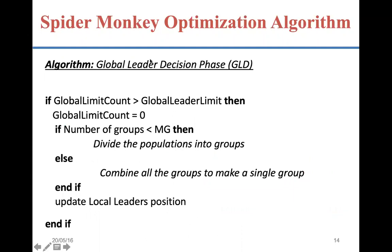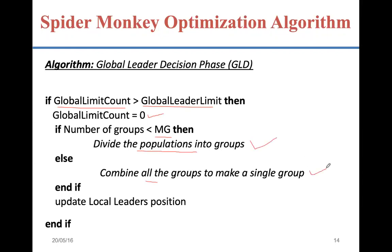The global leader decision phase is implemented such that when the global limit count reaches the global leader limit, the phase initiates; otherwise it does not. Once triggered, the global limit count resets to zero. If the maximum number of groups are not yet formed, the population undergoes fission into further smaller groups; if maximum groups are already formed, fusion combines them. After fission, local leaders are elected for the newly formed smaller groups.